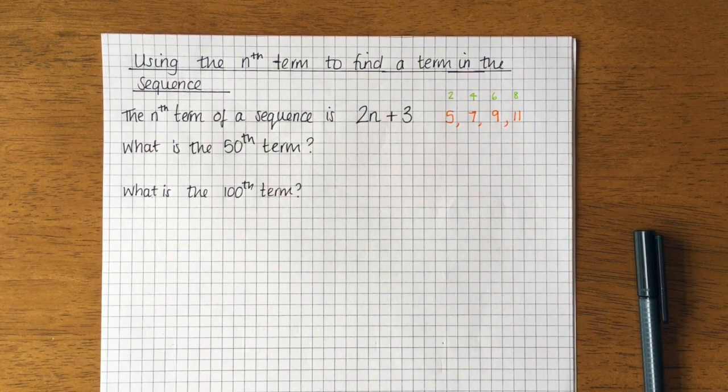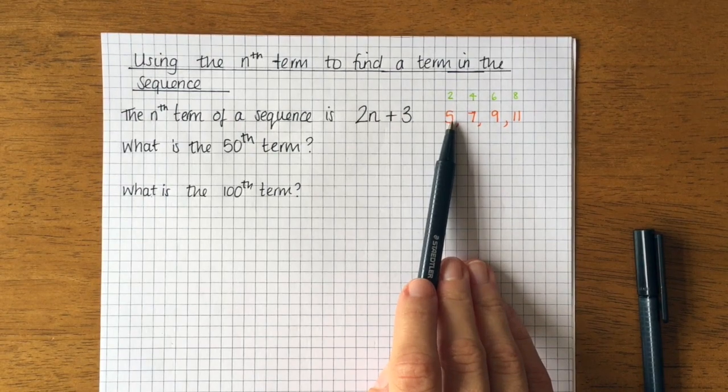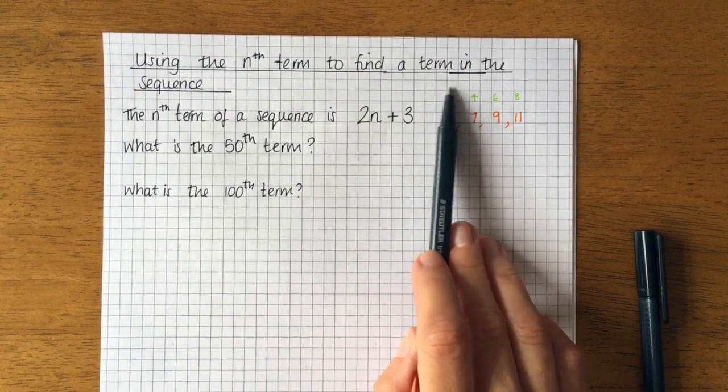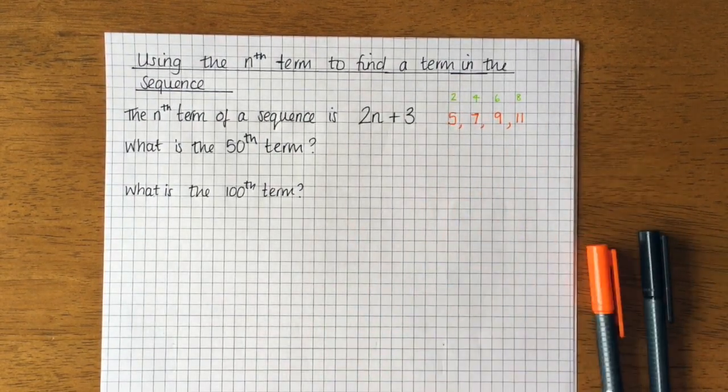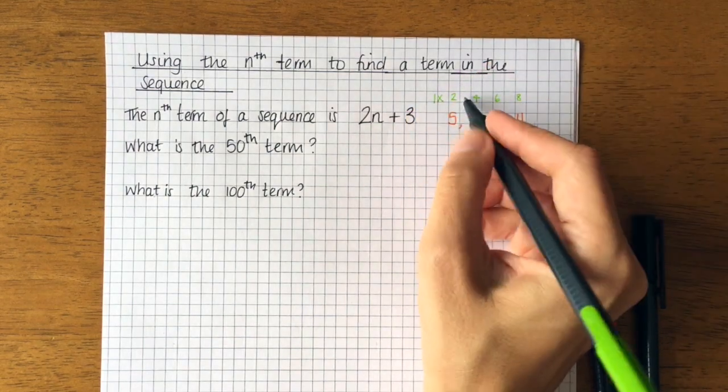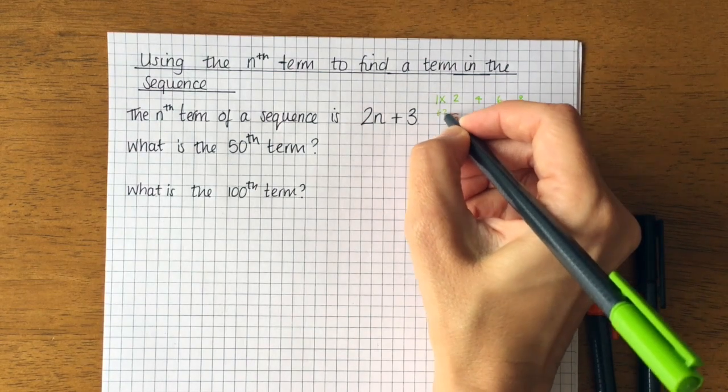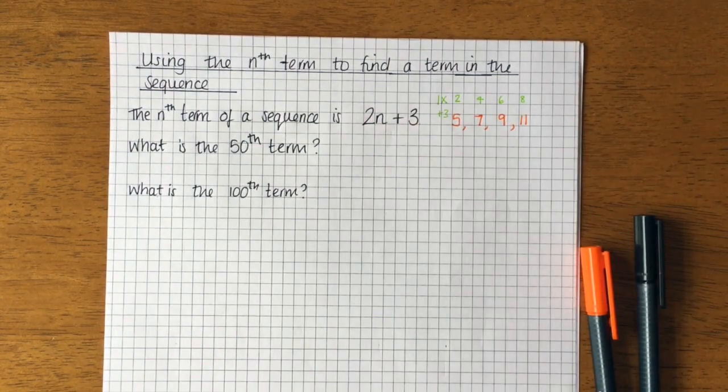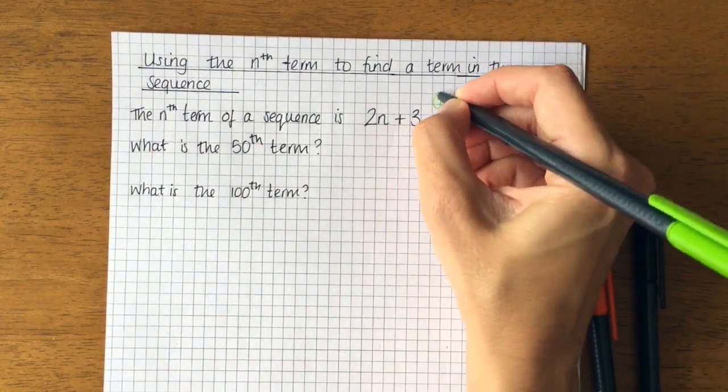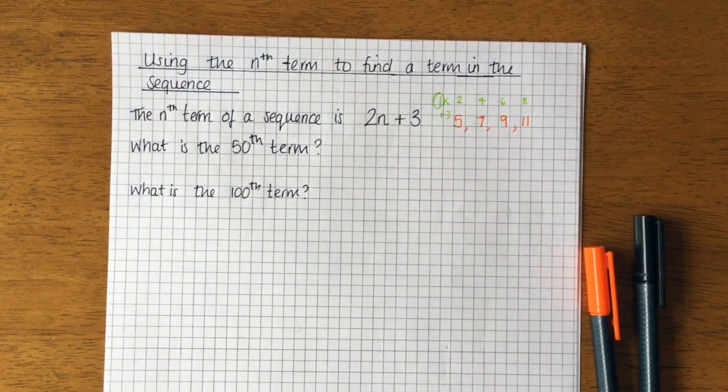So if I think about how I got to the number 5, I did the first number in the two times table, which is 1 times 2. 1 times 2 gives me 2, then I added 3 to give me 5. So this is key here, this number 1, because that's the first term in the sequence.